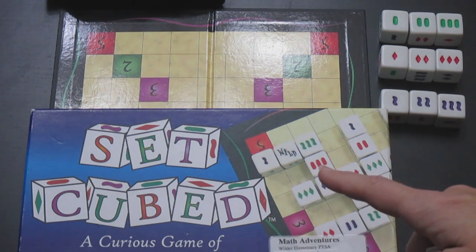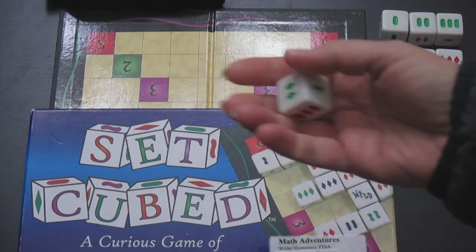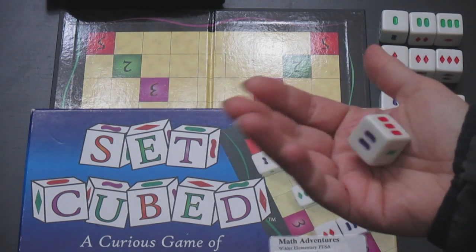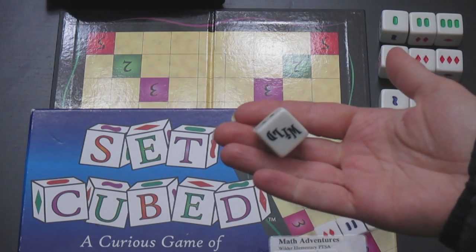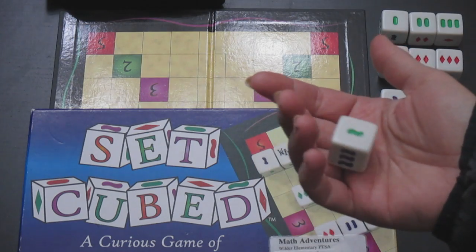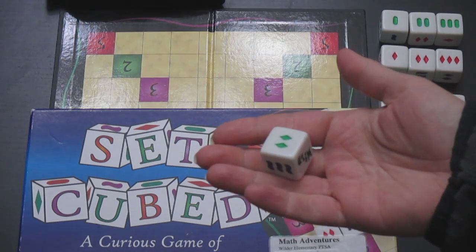Today we're going to be playing Set Cubed. Set Cubed is a game that uses dice with different colors and shapes on them, and you use that to build patterns, kind of like you do with Scrabble.